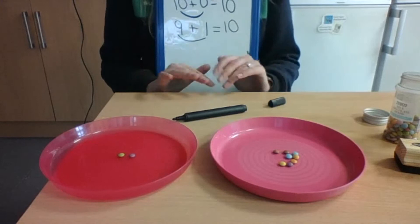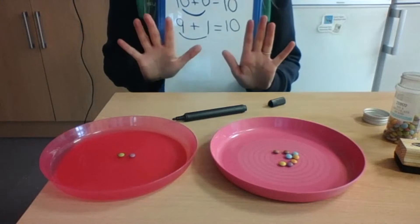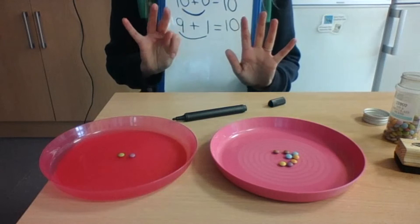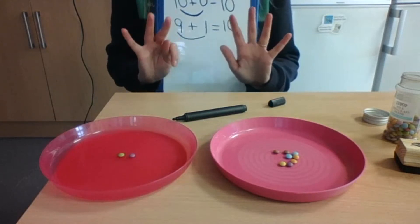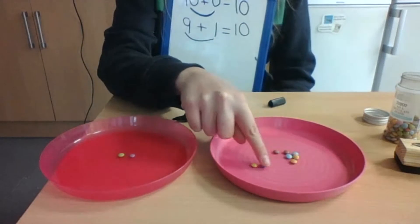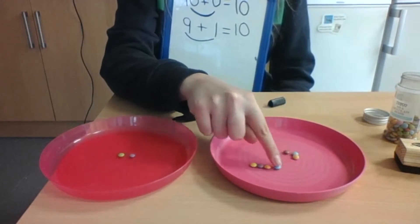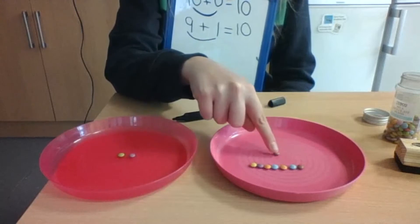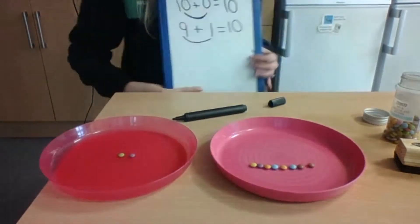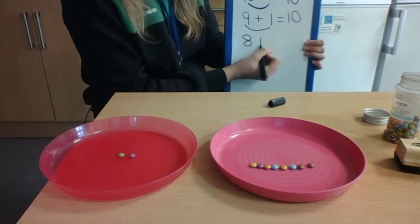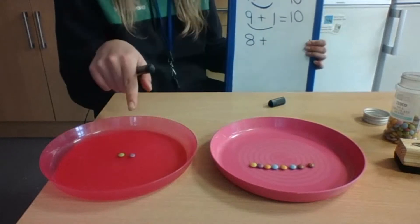Now remember, we started with 10, then we took one away, but now we've had two taken away, which leaves us with 8. Shall we count them and just check? 1, 2, 3, 4, 5, 6, 7, 8. We're right.